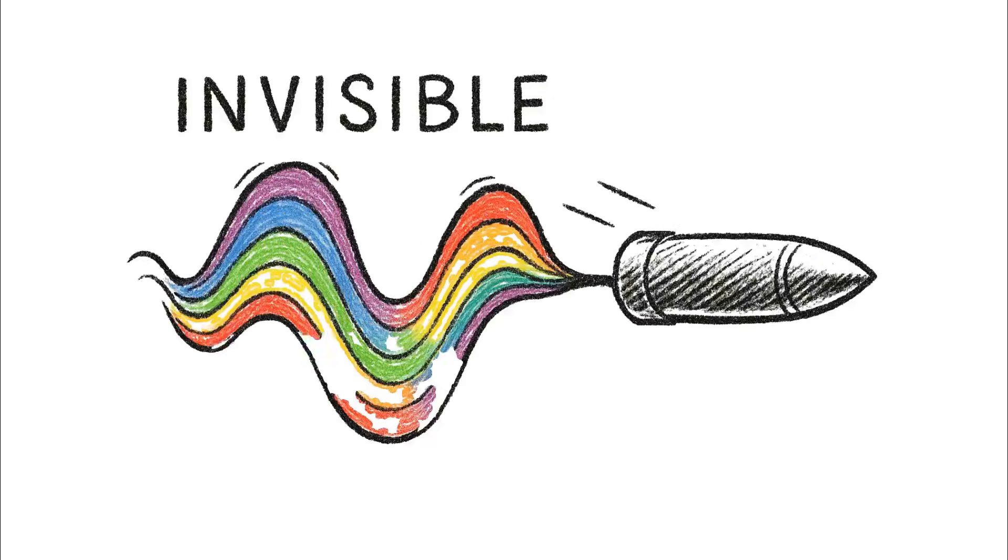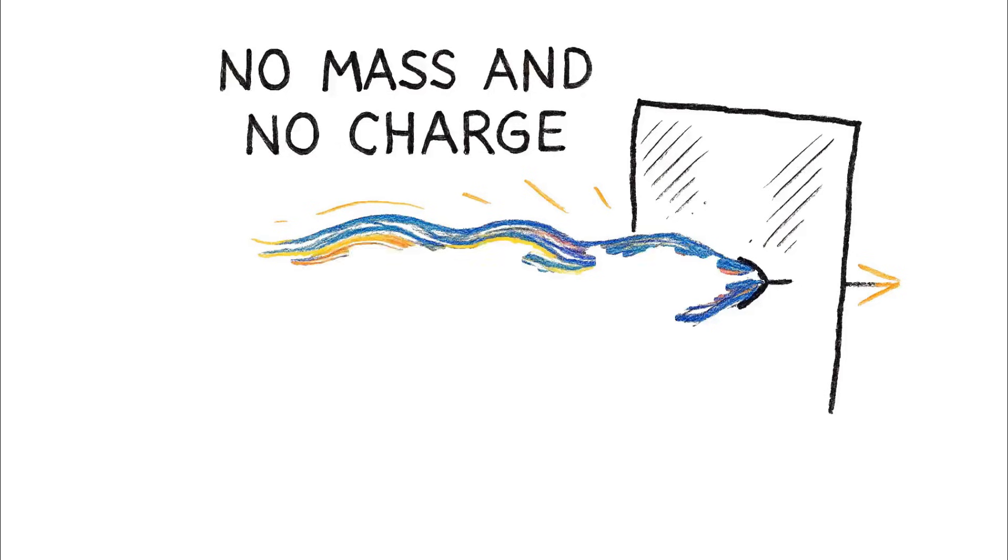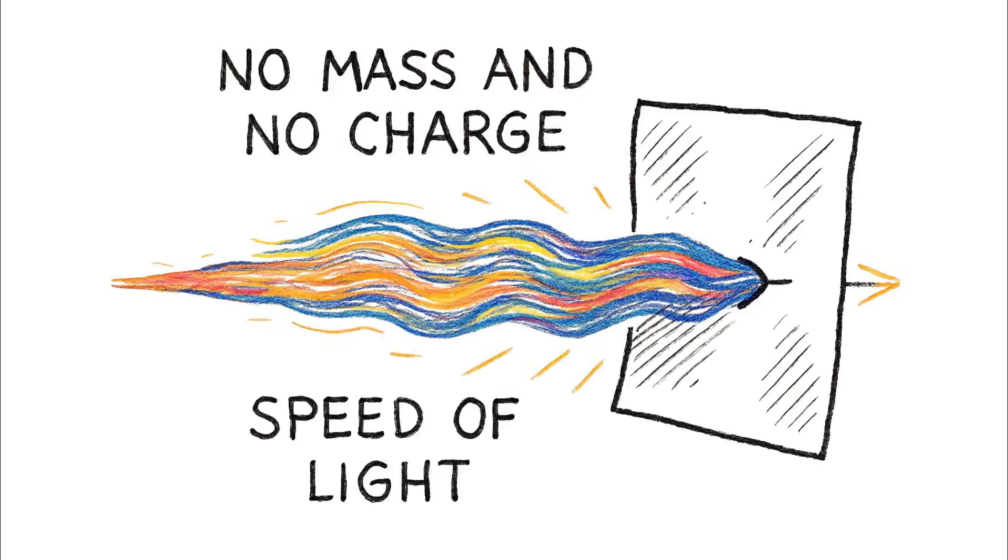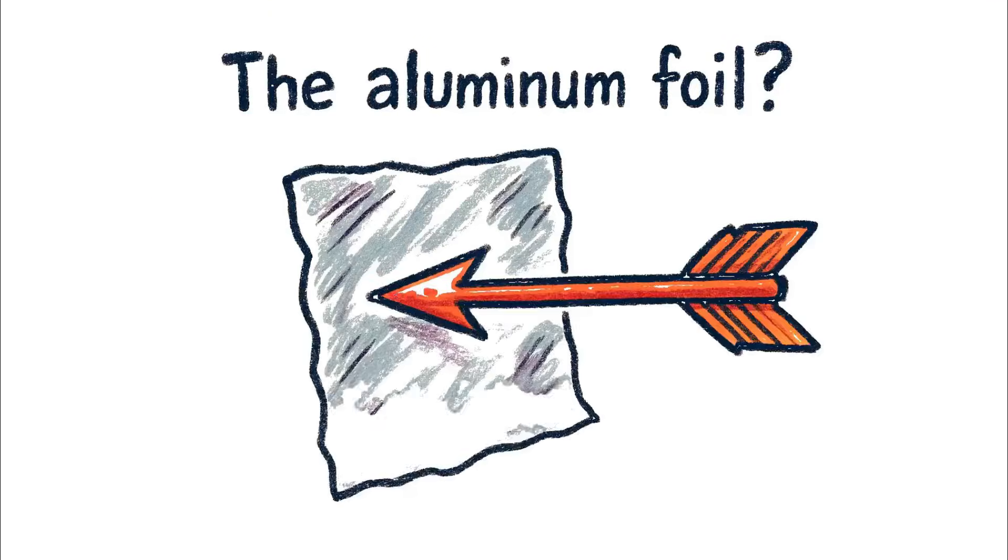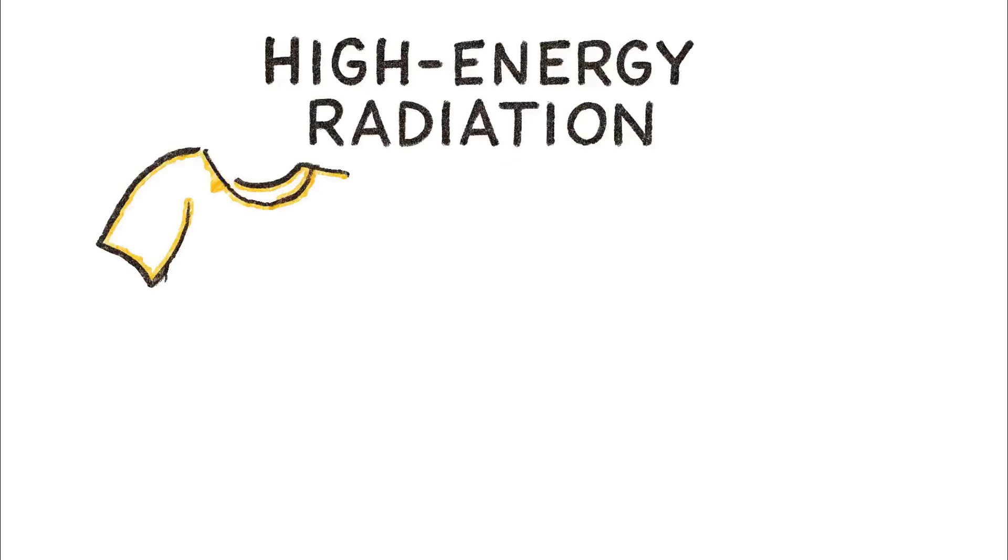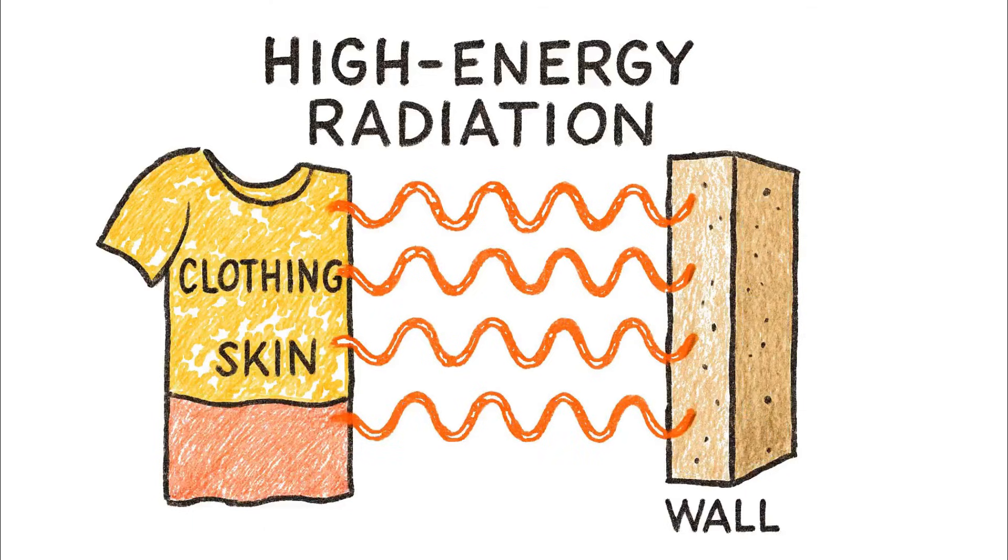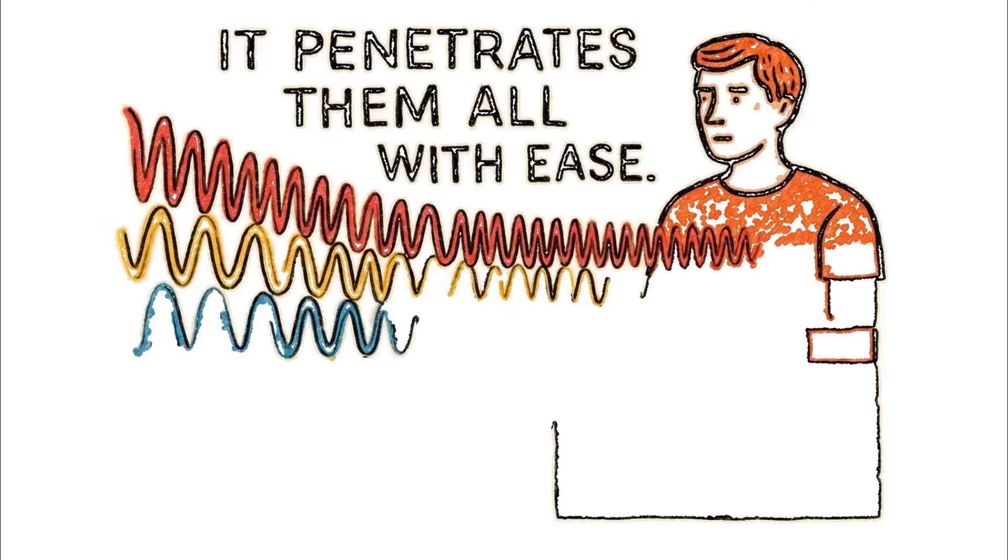The best way to think of it is as an invisible bullet. It has no mass and no charge, and it travels at the speed of light. That sheet of paper? It passes right through. The aluminum foil? It doesn't even slow it down. Your clothes, your skin, the walls of your house. It penetrates them all with ease.